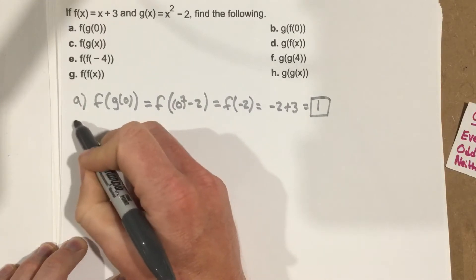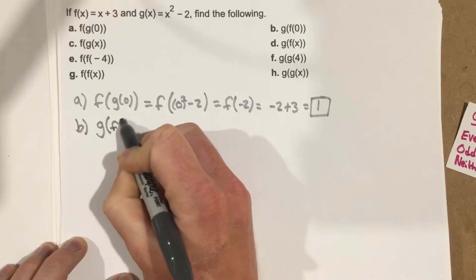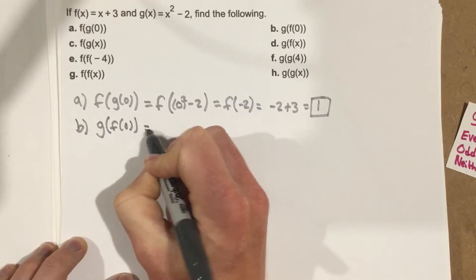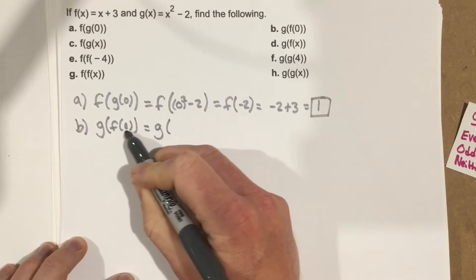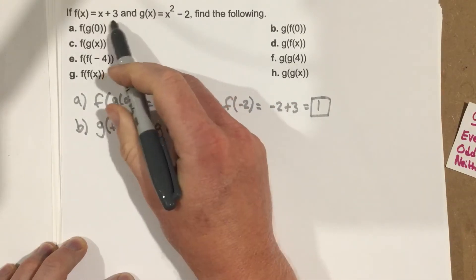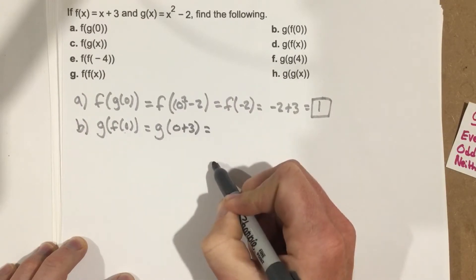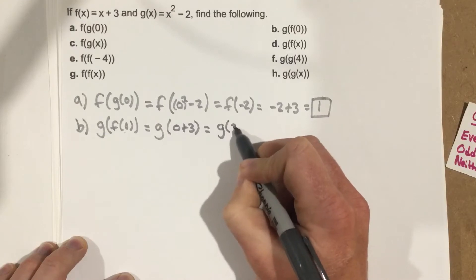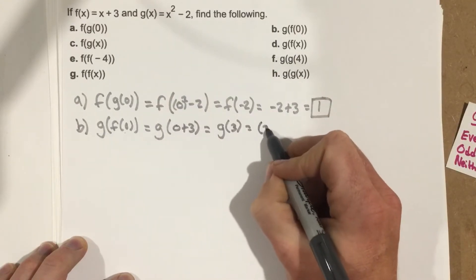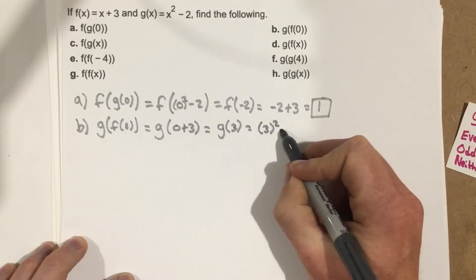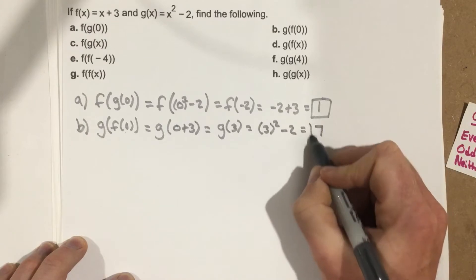Part b: g of f of 0. Now I'm taking 0 and plugging it into f first. So f of 0 is 0 plus 3, which is 3. So I have g of 3. I take 3 and plug it into g: 3 squared minus 2, which is 9 minus 2, which is 7.